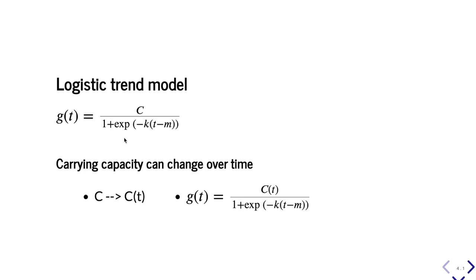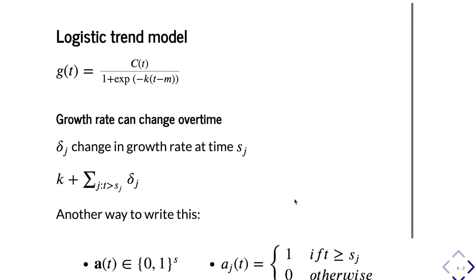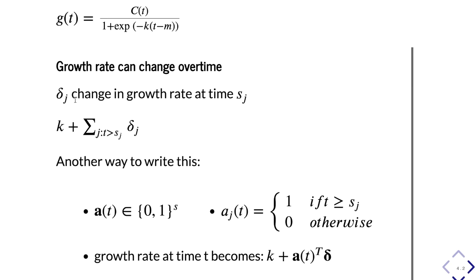Prophet takes into account those changes by first changing the carrying capacity from C to C(t), assuming that the carrying capacity is a function of time. Secondly, it assumes that the growth rate can change over time as well. With delta_j as the change in growth rate at time s_j, the growth rate becomes k plus the sum of all rate changes up to that point. Another way to write this is to vectorize the change delta as a vector and create another vector a(t) to indicate when the change happens.